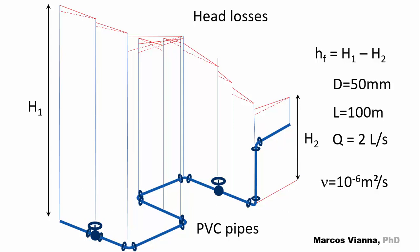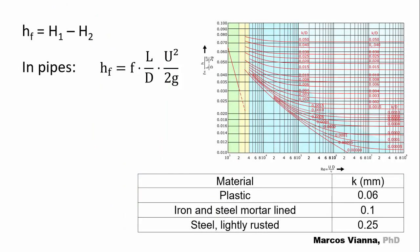So, its kinematic viscosity will be 10 to the minus 6 squared meters per second. Let's begin by calculating the head losses in the pipes. This will be the formula. The velocity is given by this formula.